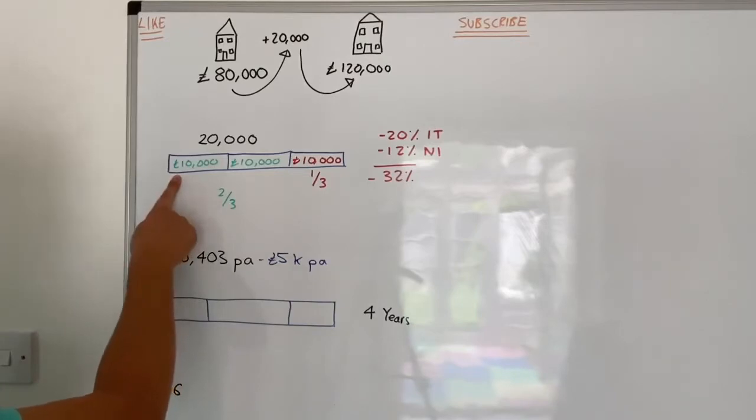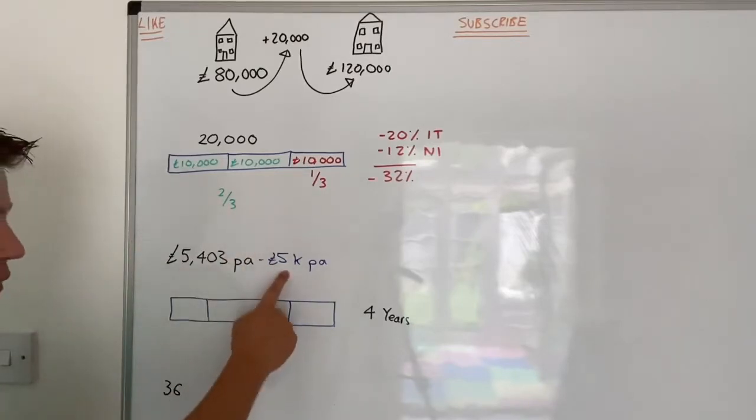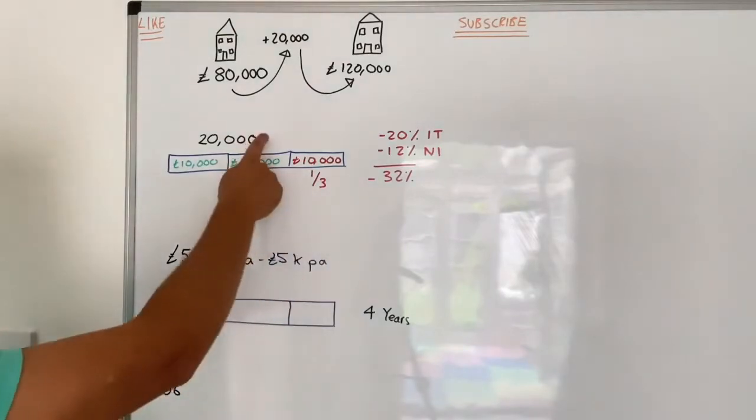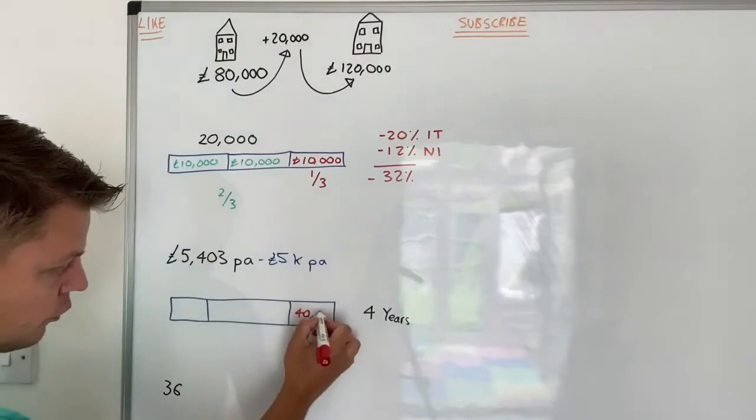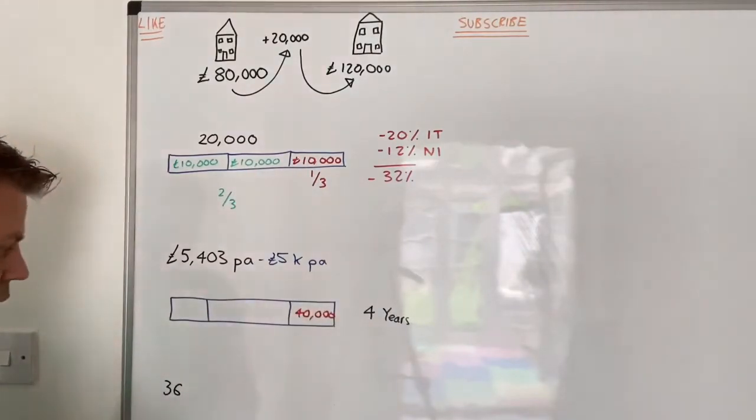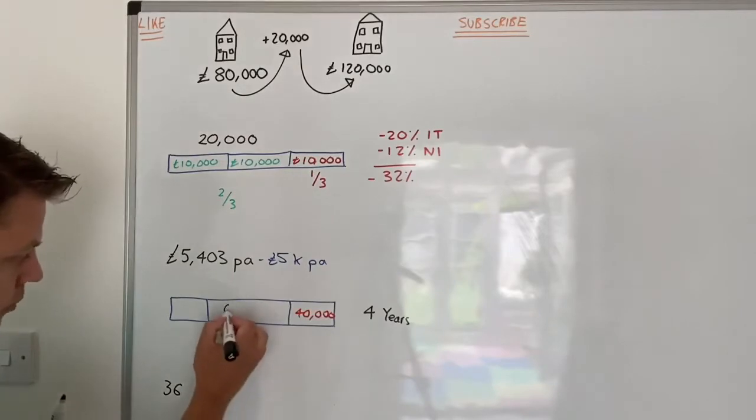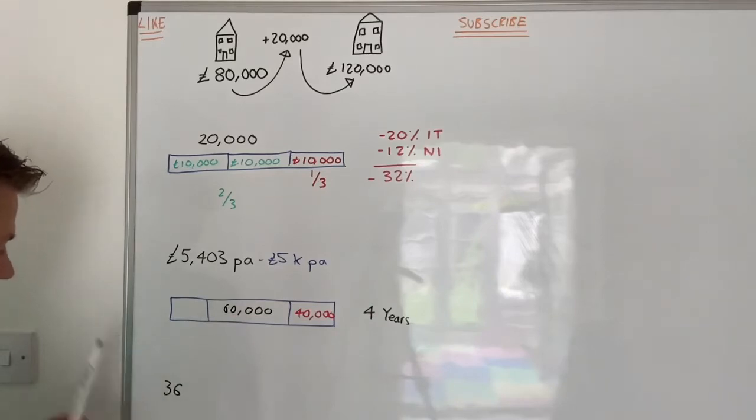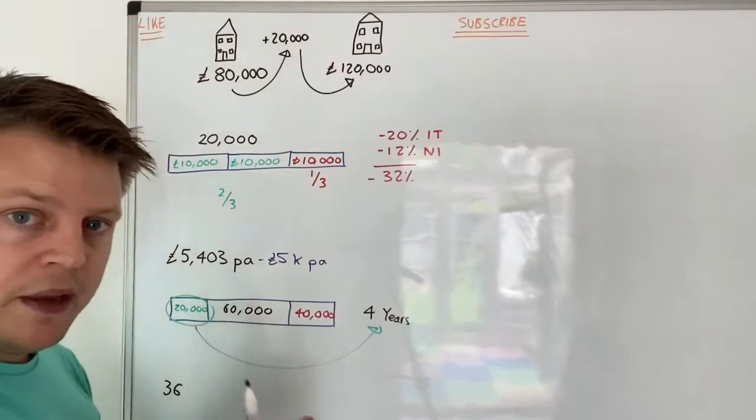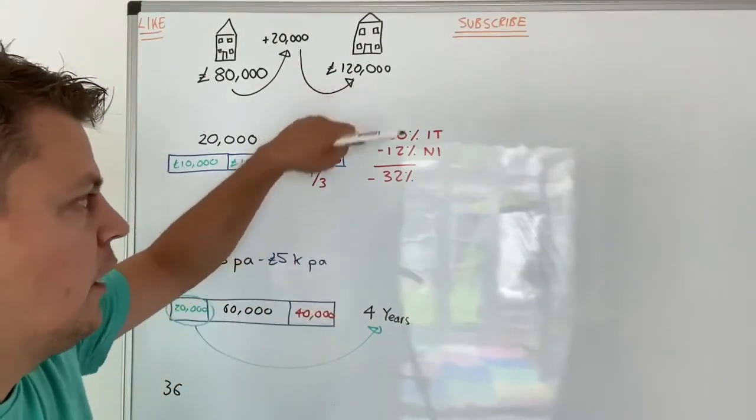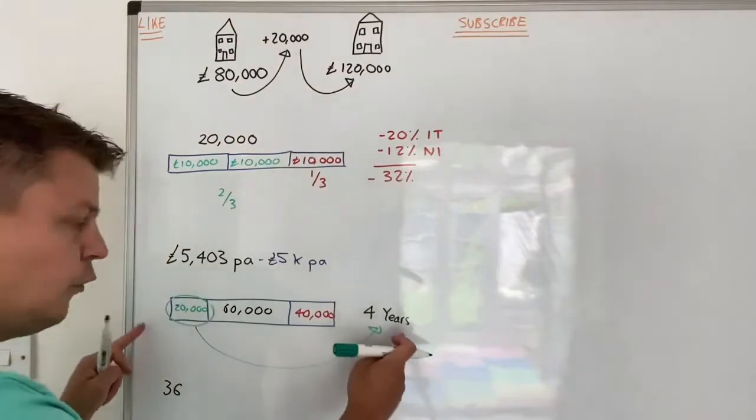With £5,000 a year, it's going to take you four years to get to your £20,000 savings pot, which means after four years you're going to have £40,000 gone in taxes and £60,000 gone on living expenses, which gives you your £20,000 in savings.